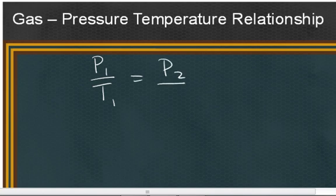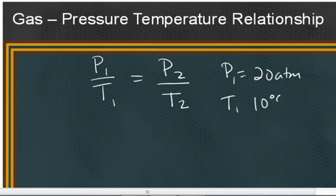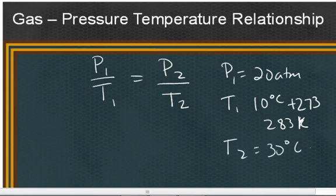And from this problem, our initial pressure is 20 atmospheres. Our initial temperature is 10 degrees Celsius. Now, this relationship is only linear if we use the absolute scale. So we'll have to add 273 to that to get 283 Kelvin. And then the final temperature is 30 degrees Celsius, but we'll have to add the 273 to convert to Kelvin. And so that's 303 Kelvin.